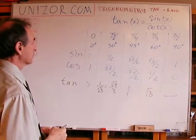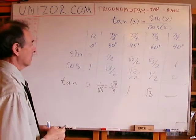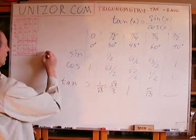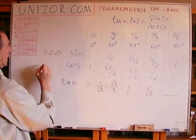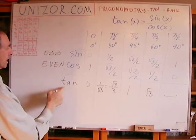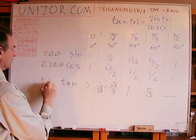Now, how about other properties? You do remember that sine is an odd function, and cosine is an even function. Now, that makes tangent an odd function.